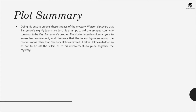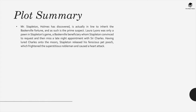Beryl Stapleton provides an enigmatic warning, and Watson learns of a secret encounter between Sir Charles and a local woman named Laura Lyons on the night of his death. The doctor interviews Laura Lyons to assess her involvement, and discovers that the lonely figure surveying the moors is none other than Sherlock Holmes himself, hidden so as not to tip off the villain as to his involvement, helping to piece together the mystery. Stapleton, Holmes has discovered, is actually in line to inherit the Baskerville fortune, and as such is the prime suspect. Laura Lyons was only a pawn in Stapleton's game — a Baskerville beneficiary whom Stapleton convinced to request and then miss a late-night appointment with Sir Charles. Having lured Charles onto the moors, Stapleton released his ferocious pet, which frightened the superstitious nobleman and caused a heart attack.